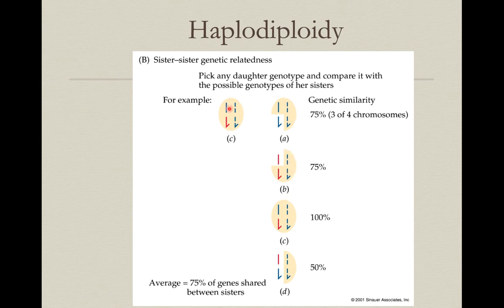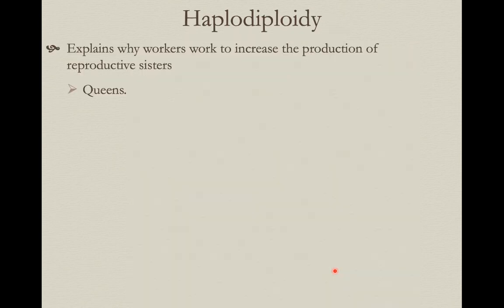This individual compared to this one: they share the blue plain chromosome from the female, so their average relatedness is 75%. This one is related 75% to this one through the red hooked chromosome. This individual is actually a clone of this one — 100% related. Sometimes they may not share any maternal genes, but they still share dad's genes at 50%. Adding these four together: 75, 75, 100, 50 — the average is 75%.